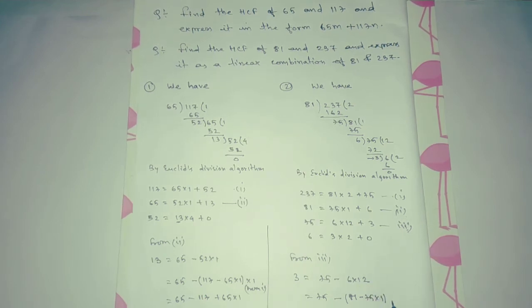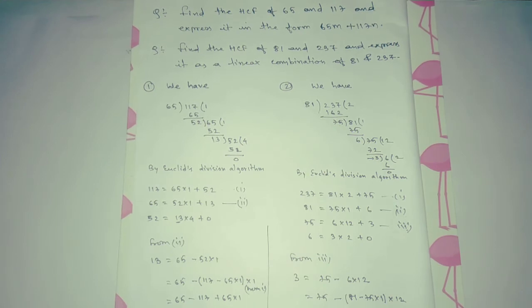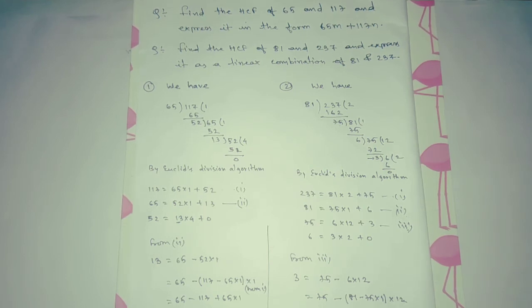Expanding: 3 = 75 − (81 − 75 × 1) × 12 = 75 − 81 × 12 + 75 × 12. Combining the 75 terms: 1 × 75 + 12 × 75 = 13 × 75, and we have minus 81 × 12.